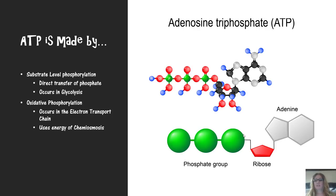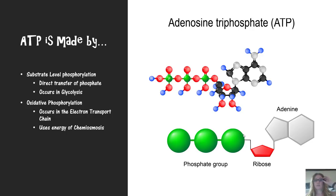Adenosine triphosphate is the real name of ATP, and it has three phosphate groups. ATP is made by two different mechanisms: substrate level phosphorylation during glycolysis — the direct transfer of phosphate from one molecule to another — and in the electron transport chain, ATP is made by oxidative phosphorylation, which uses the energy of the proton motive force, also called the energy of chemiosmosis.